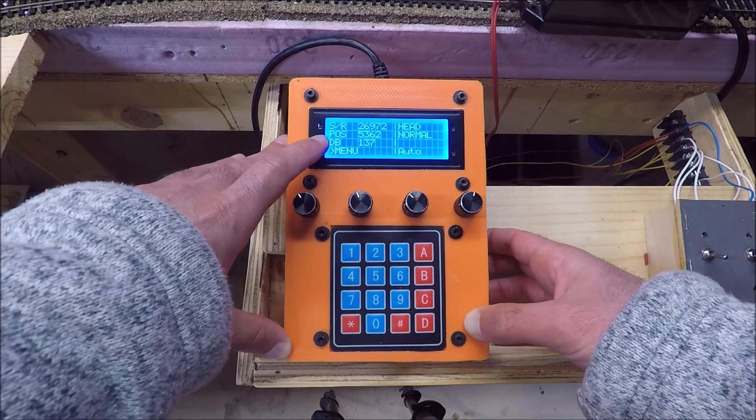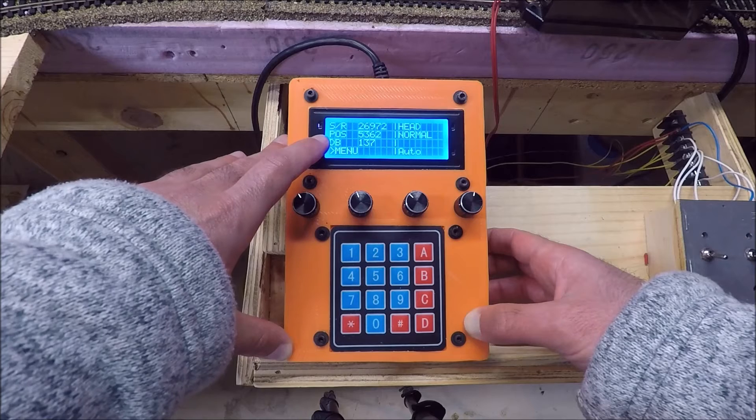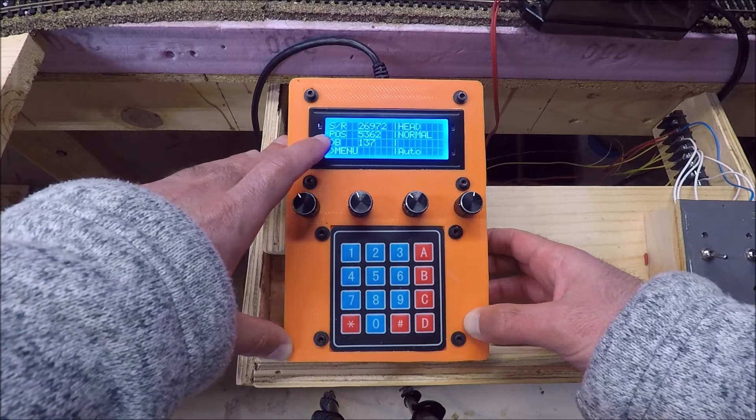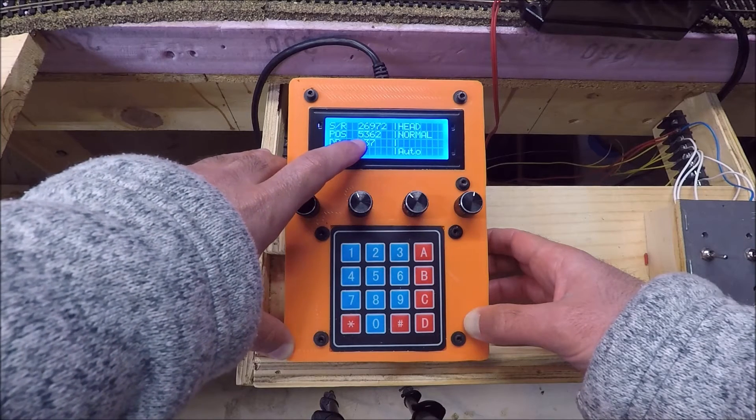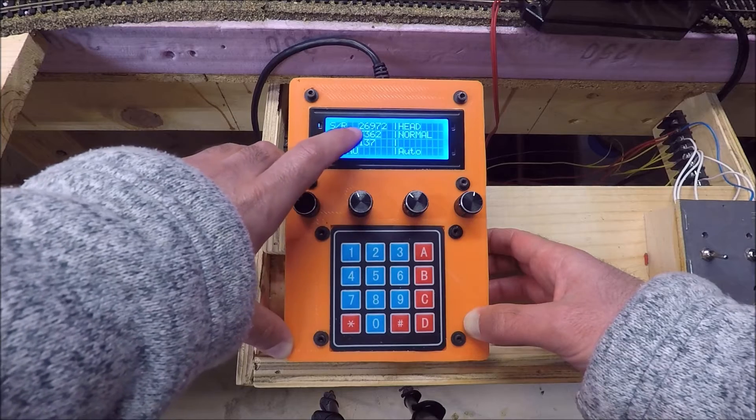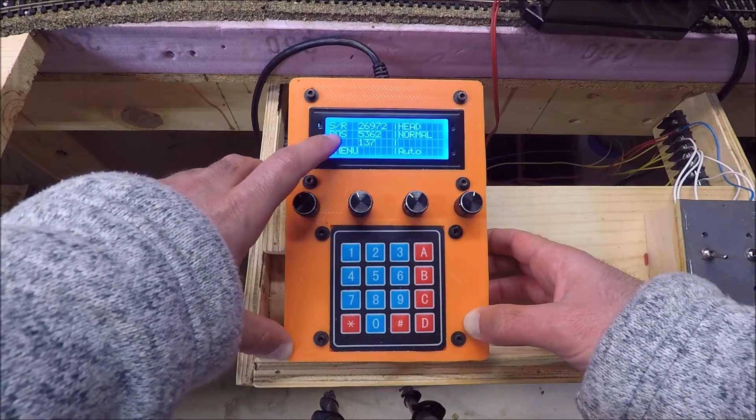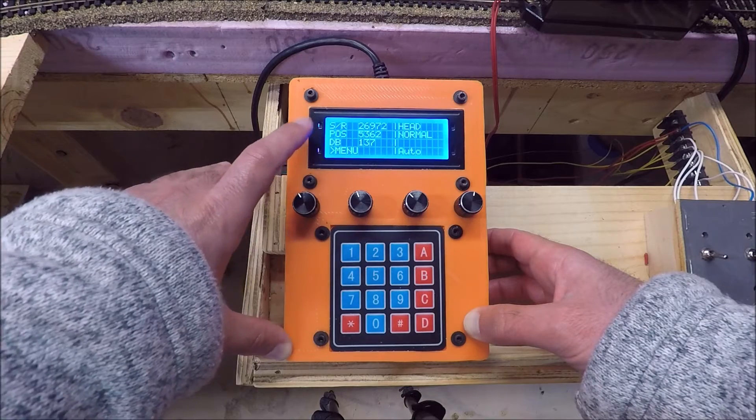This POS despite what you might be thinking that means position. And this means that the turntable is currently in position 5,362 of the total steps in the turntable. So that tells you exactly where the turntable is at in the code.